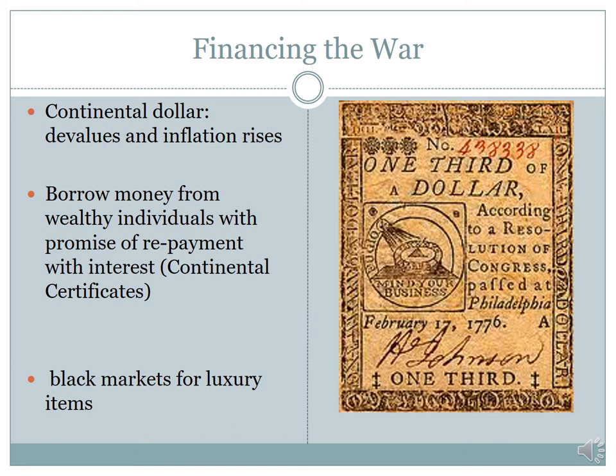The first thing we're going to talk about is the financial instability and corruption that the American Revolution is creating for the colonies. The Continental Congress had decided to print money to cover the cost of the war. But within a few short years, its value deteriorated because the Congress had no reserves of gold or silver to back up the currency. Soon the Congress had to resort to other means to procure supplies and labor. One method was to borrow hard money from wealthy men who were given certificates of debt, promising repayment with interest. This becomes known as the IOU problem after the American Revolution.